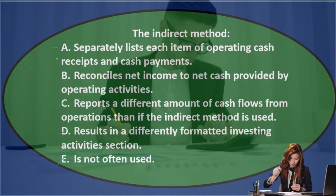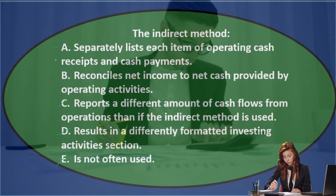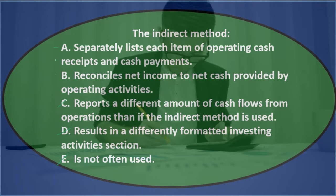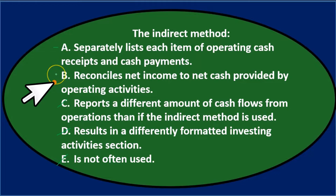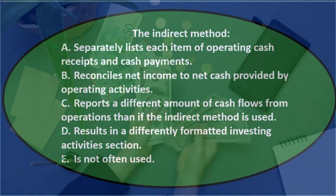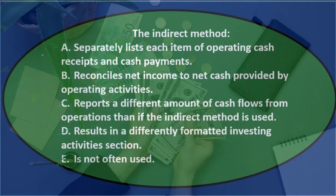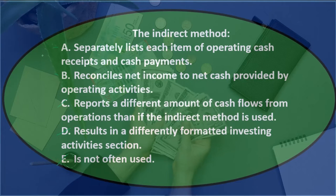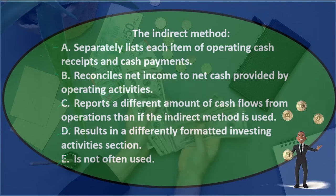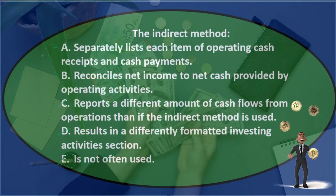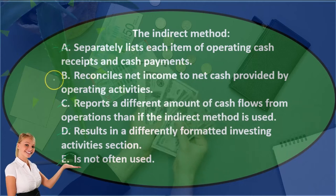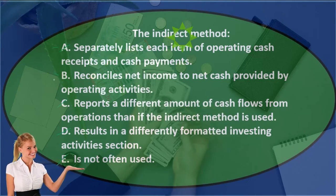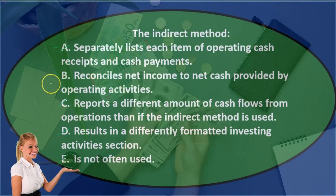Between A) separately lists each item of operating cash receipts and cash payments, and B) reconciles net income to net cash provided by operating activities — B sounds exactly like what the indirect method does: we start with net income and end with cash provided by operating activities. A sounds more like the direct method, which lists cash receipts from customers and cash paid for inventory. Final answer: B) the indirect method reconciles net income to net cash provided by operating activities.